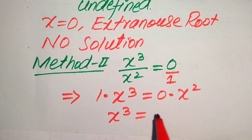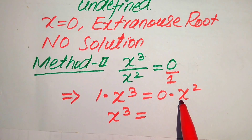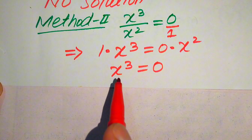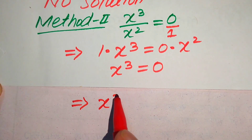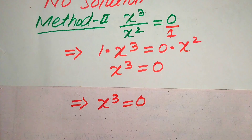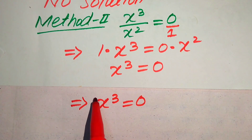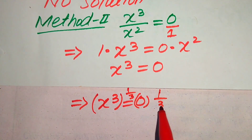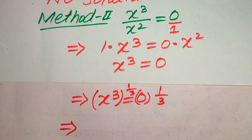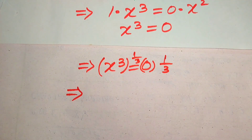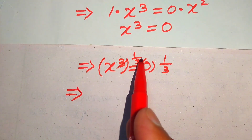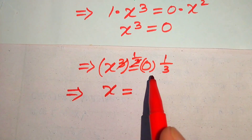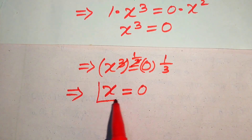From here we get x cubed equals 0, since 0 times x squared equals 0. So the equation becomes x cubed equals 0. To solve for x, we take the cube root on both sides — that is, we raise both sides to the power of 1 over 3. The 3 and 1/3 cancel, and we get x equals 0 to the power of 1 over 3, which equals 0.